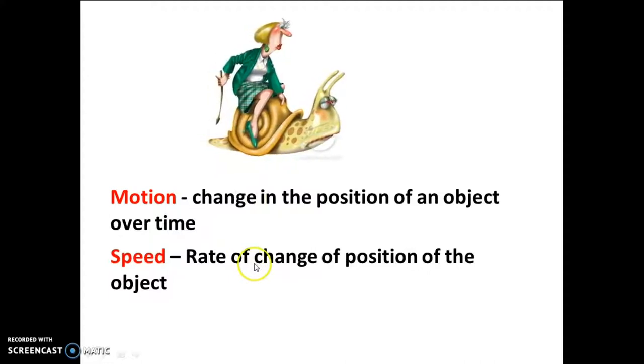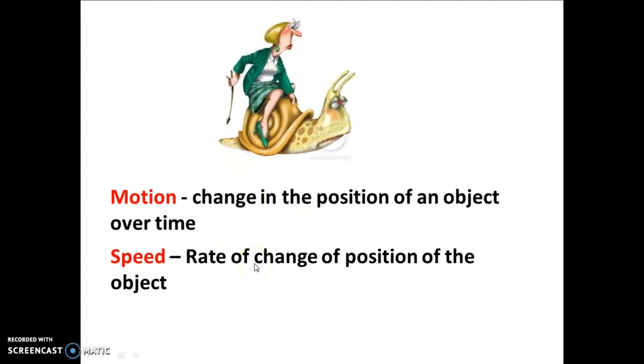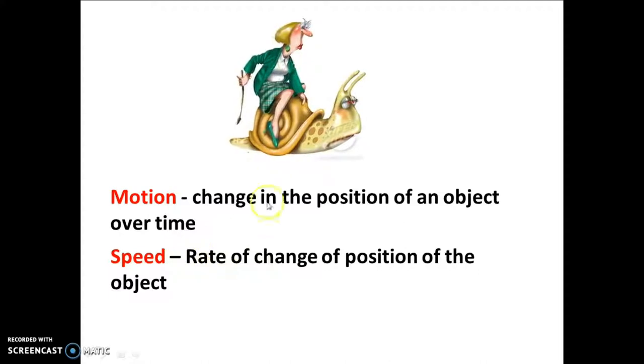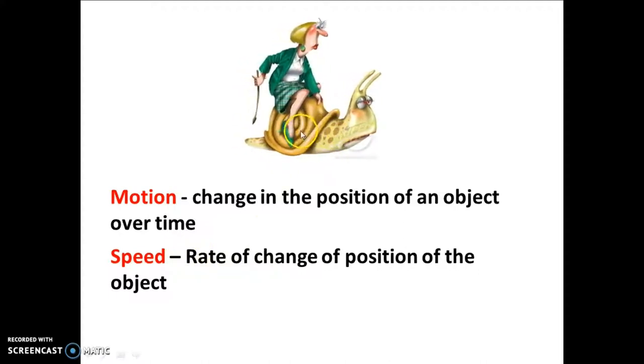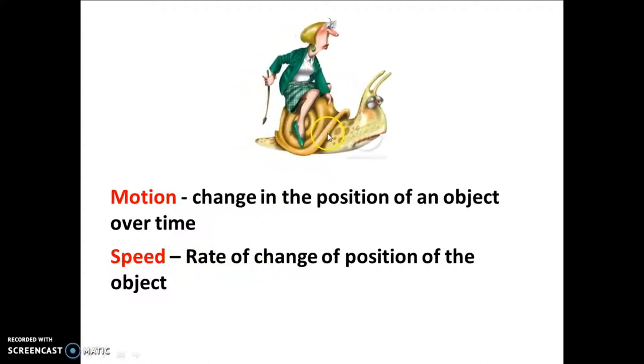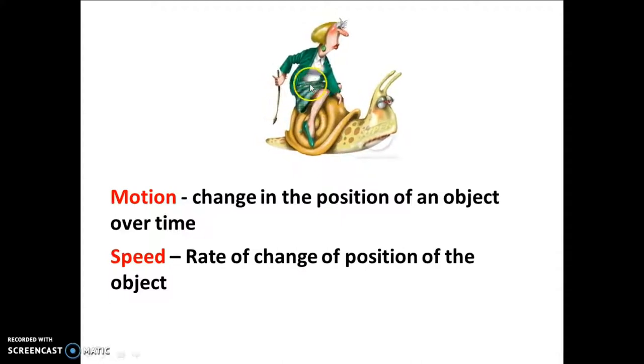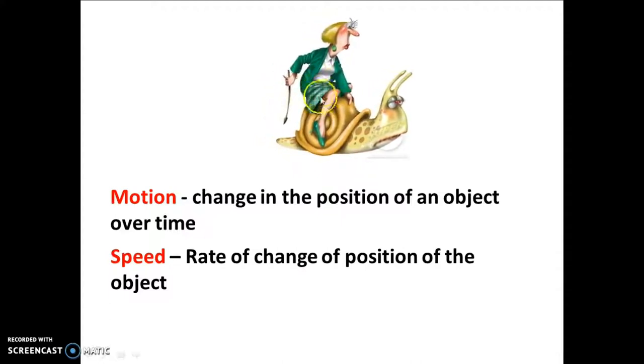The rate of change of position of the object with time is called its speed. In the above animation, we can see that the speed of this snail is very slow and the woman sitting on it is quite annoyed because it is moving so slowly.